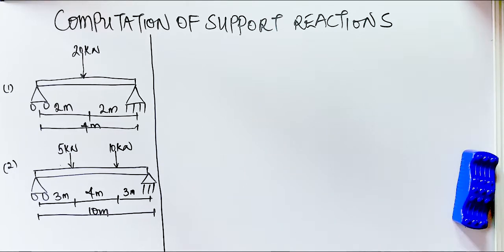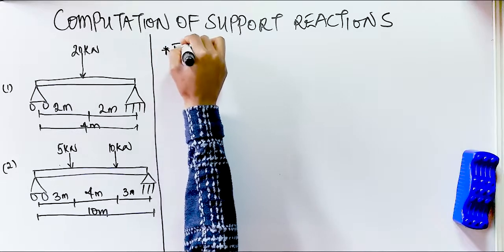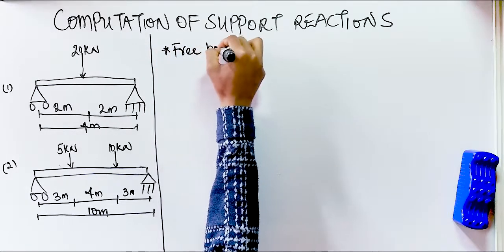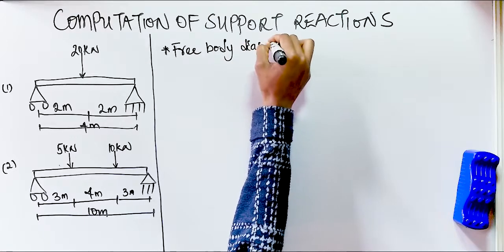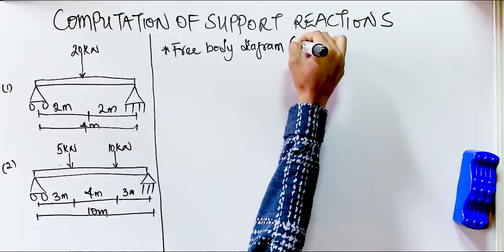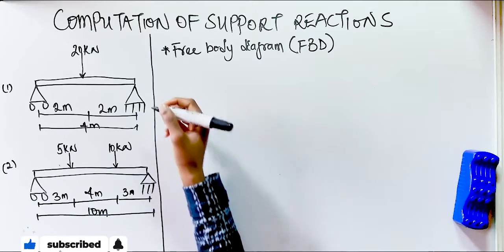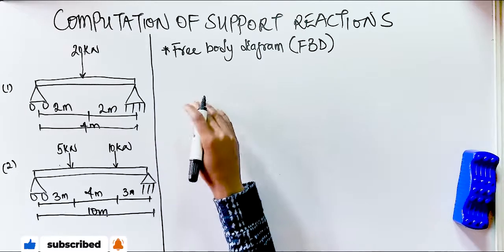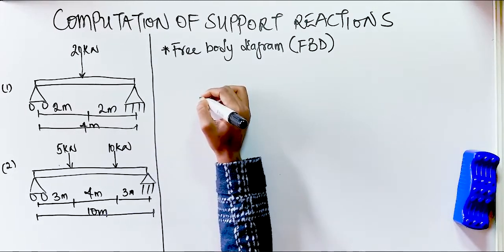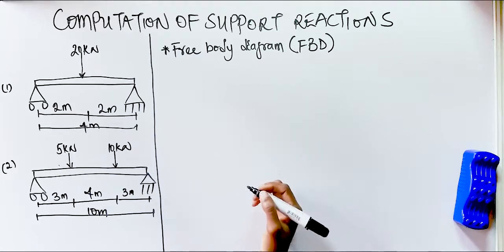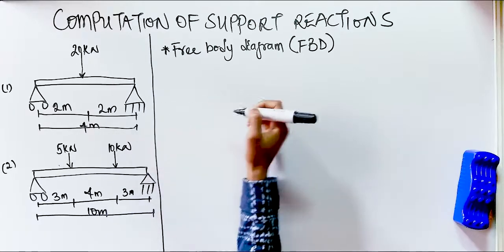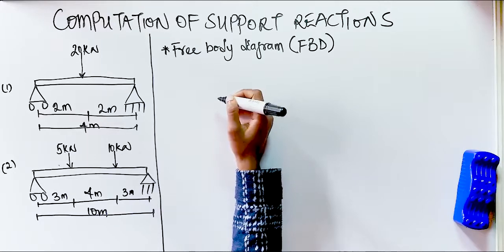In computing support reactions, the first step is to draw the free body diagram of the structure. You only draw the free body diagram if the question wasn't given in free body diagram form — if it was already given, there's no need to draw it. Since this question is not given as a free body diagram, the first thing we do is draw it. A free body diagram is simply a sketch showing the physical conditions of a problem.